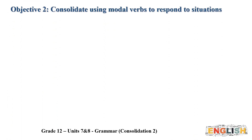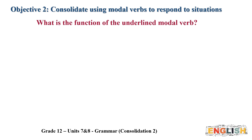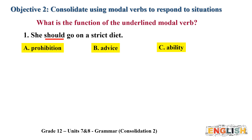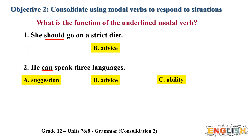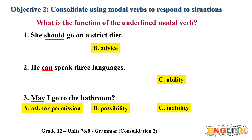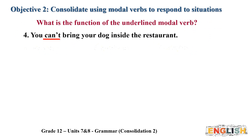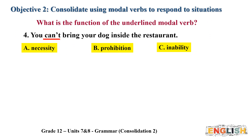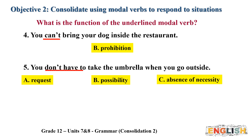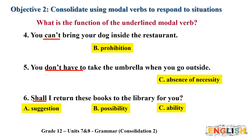The second grammar point is modal verbs and their functions. 'Should' expresses advice. 'Can' expresses ability. 'May' in question form is used for asking for permission. 'Can't' expresses prohibition. 'Don't have to' expresses absence of necessity. And 'shall' expresses suggestion. Now pause the video, read the three sentences, and rewrite them using the modal verbs in brackets. Sentence A: 'You don't have to wear formal attire for the ceremony.' Sentence B: 'You mustn't use your camera in the museum.' Sentence C: 'The mother might have gone out to do the shopping.'